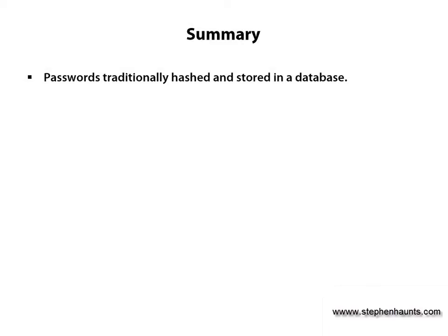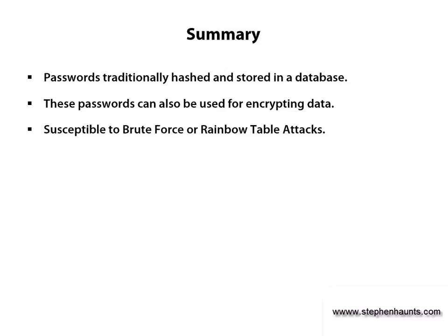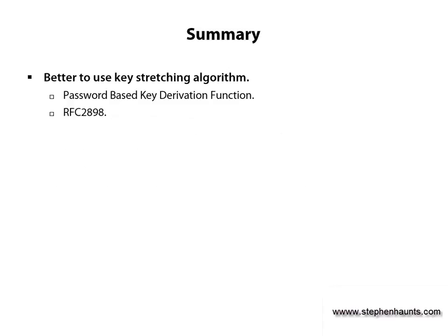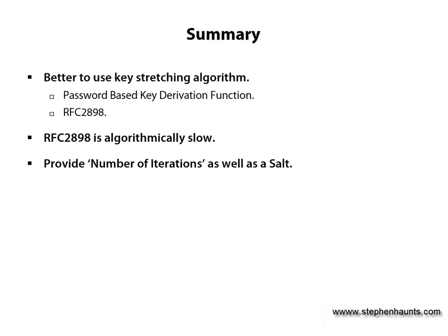In this course, we have talked about how traditionally passwords were hashed with algorithms like MD5, SHA1 and SHA256 and then stored in the database. Hashed passwords can also be used as keys for encrypting data. These hashed passwords are susceptible to brute force dictionary attacks and attacks using rainbow tables. To help guard against this, you can add a salt to the password before hashing, making it much harder to recover using a brute force approach. But with CPUs and GPUs getting so fast, running billions of calculations per second, password recovery becomes more likely. To mitigate further, we can use a key stretching algorithm or password based key derivation function, also known as RFC 2898. This algorithm is designed to be slow to guard against brute force attacks. You pass a number of iterations parameter to determine how slow the algorithm will be, meaning your key derivation function will scale with Moore's law as processors get much faster.